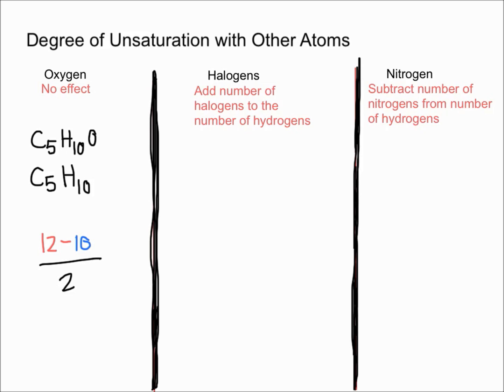To calculate the degree of unsaturation or the index of hydrogen deficiency for this atom, we're going to first find the total number of hydrogen atoms that a fully saturated molecule with five carbons would have. We use that formula of 2n plus 2, with n being 5. So a fully saturated molecule would have 12 hydrogens.